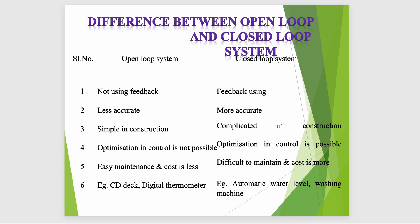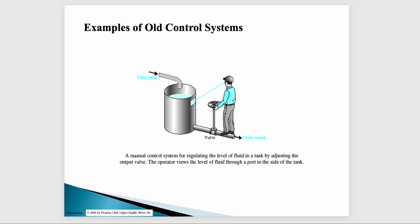An example of the closed loop system is the automatic water level controller or the automatic washing machine — where we detect that the water level in the tank is less, the motor pump starts working again, and it brings the level to the optimum point. This is the key difference between the open loop and the closed loop.